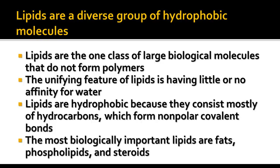Another group of biomolecules we talk about are lipids. Lipids are what we call hydrophobic molecules — they do not really form polymers, and the important thing about lipids as a group is that they have little or no affinity for water. They're hydrophobic because they consist mostly of hydrocarbons, which are just hydrogen and carbon forming non-polar covalent bonds rather than polar ones. The most important lipids to us are the fats, phospholipids, and steroids.